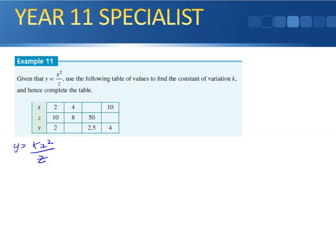And therefore we'll need to find our k, and of course we're going to use all these three numbers to find our k. So we've got x equals 2, y equals 2, and z equals 10. And therefore when I substitute it in I get 2 equals 2 squared is 4, k divided by z was 10. So I'm going to get 20 equals 4k. So k equals 5.